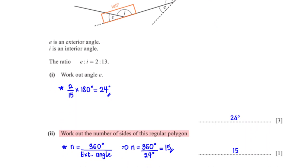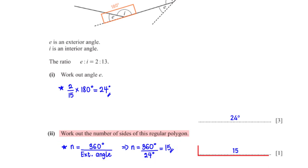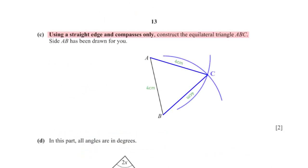Work out the number of sides of this regular polygon. Using the formula 360 divided by the exterior angle, with E equals 24 degrees, gives 15 sides. Using a straight edge and compasses only, construct equilateral triangle ABC, where side AB is drawn. We measure AB to be 4 cm. Setting the compass width to 4 cm, we construct arcs from A and from B; their intersection is point C. We then draw lines from A to C and B to C to complete the triangle.